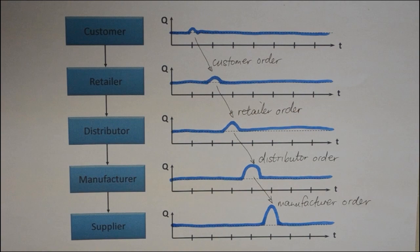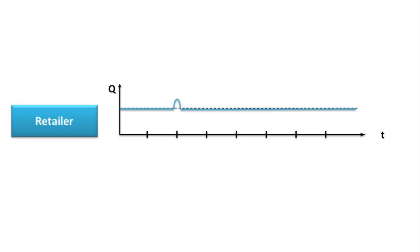Why is it called the bullwhip effect? As the oscillating demand magnifies upstream in the supply chain, it is reminiscent of a cracking whip.